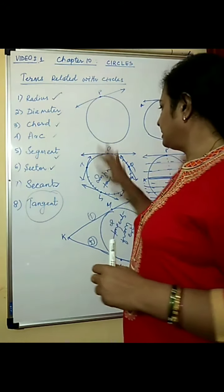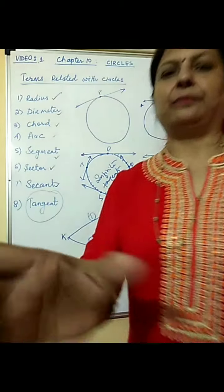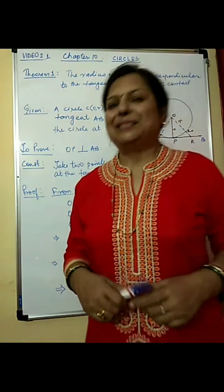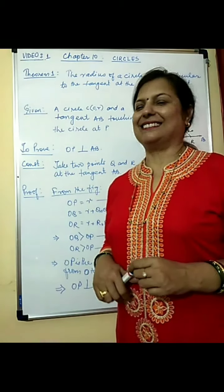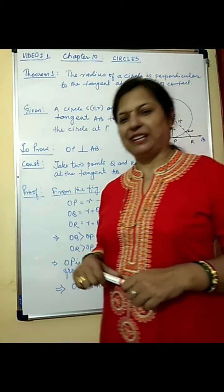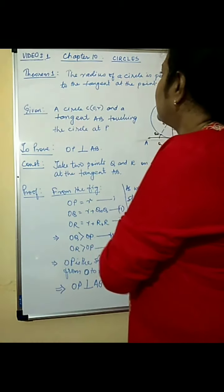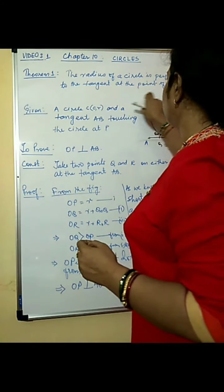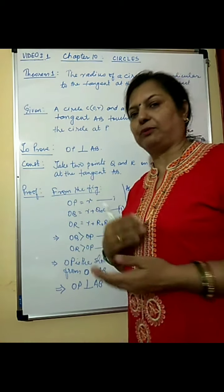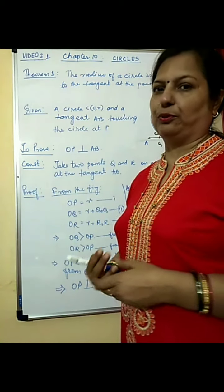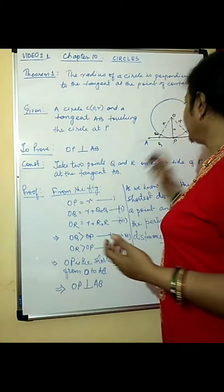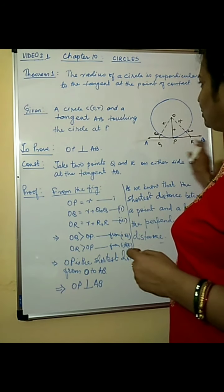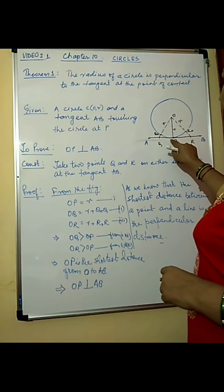So these are certain things related with lines in a circle. Now let us move to the theorems related with tangents. This is the first theorem: the radius of a circle is perpendicular to the tangent at the point of contact.